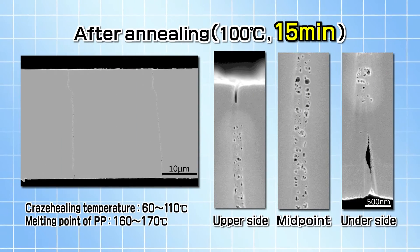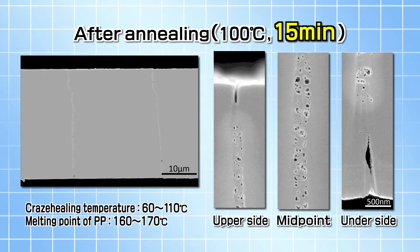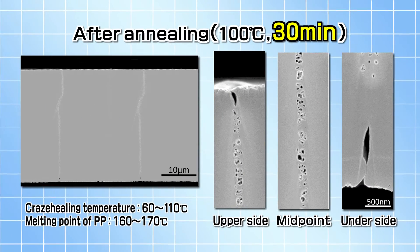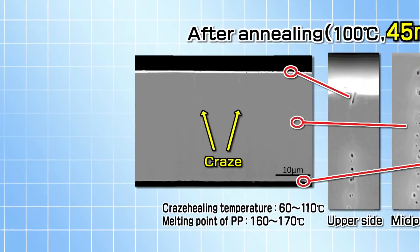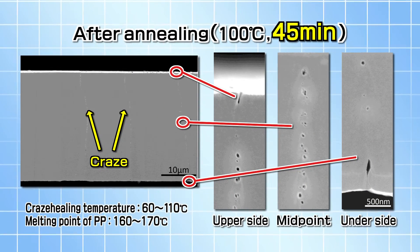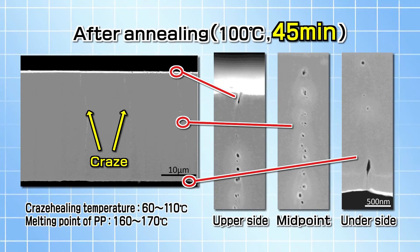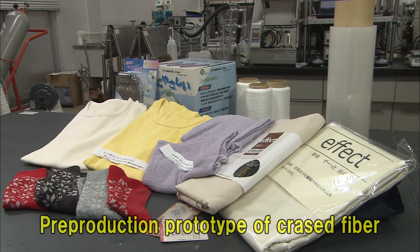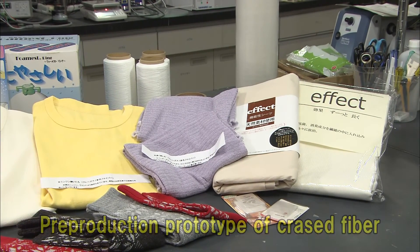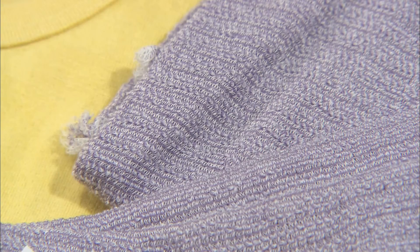After annealing at 100 degrees for 15, 30, and 45 minutes, the craze voids are healed gently, turning back to a no-craze phase. This healing takes place at much lower than the melting point of the polymer. Thanks to this low healing temperature, heat-sensitive functional agents included in the polymer stay without deforming.